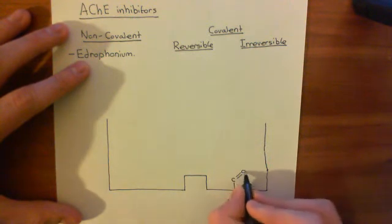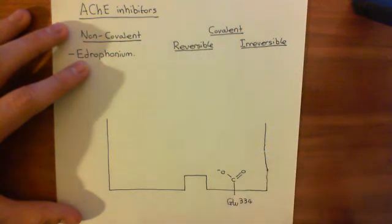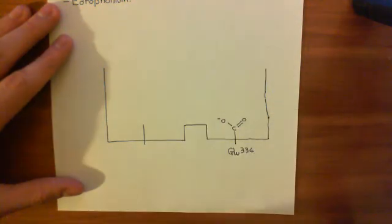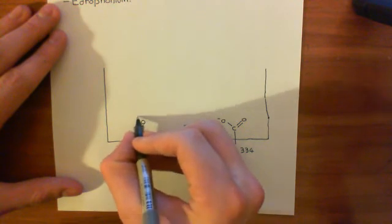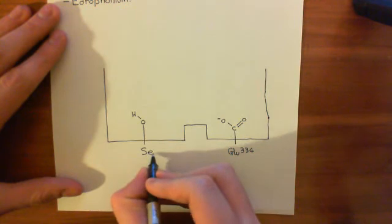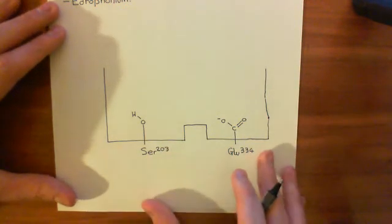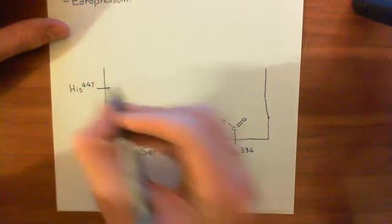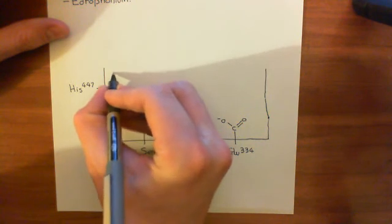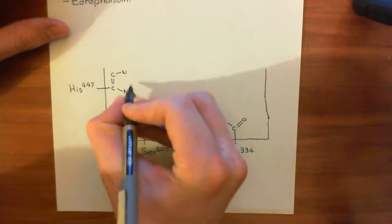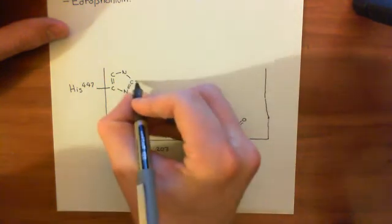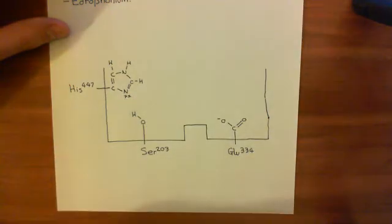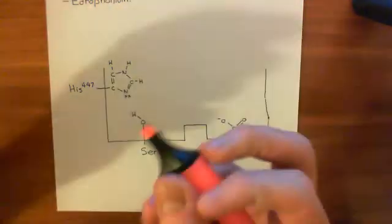This glutamate has a carboxylic acid group which has lost its proton and therefore carries a negative charge. This was extremely important in bringing acetylcholine into the active site of the enzyme. We also have serine at position 203, whose functional group is an alcohol. And histidine at position 447, which has an imidazole ring — a five-membered ring where two members are nitrogen and three are carbon, with a lone pair of electrons off one nitrogen.